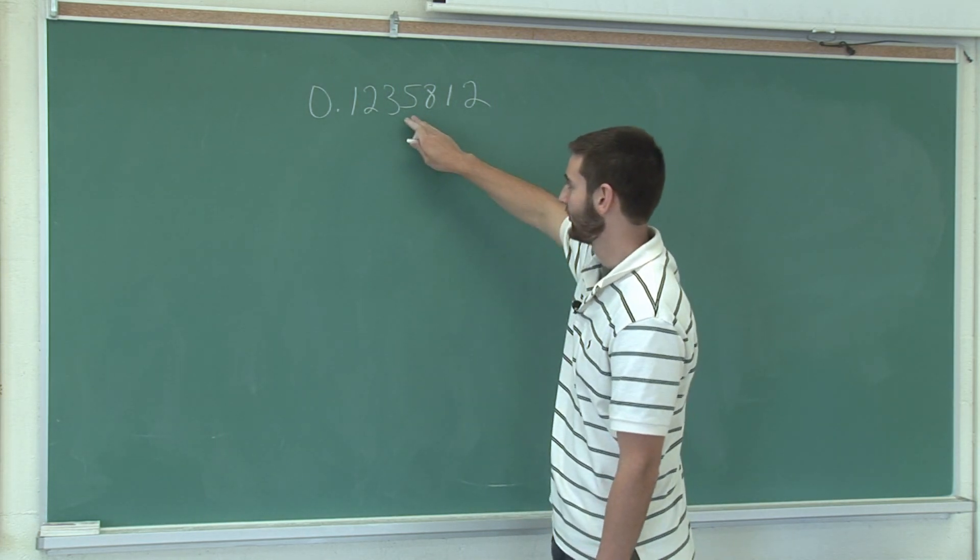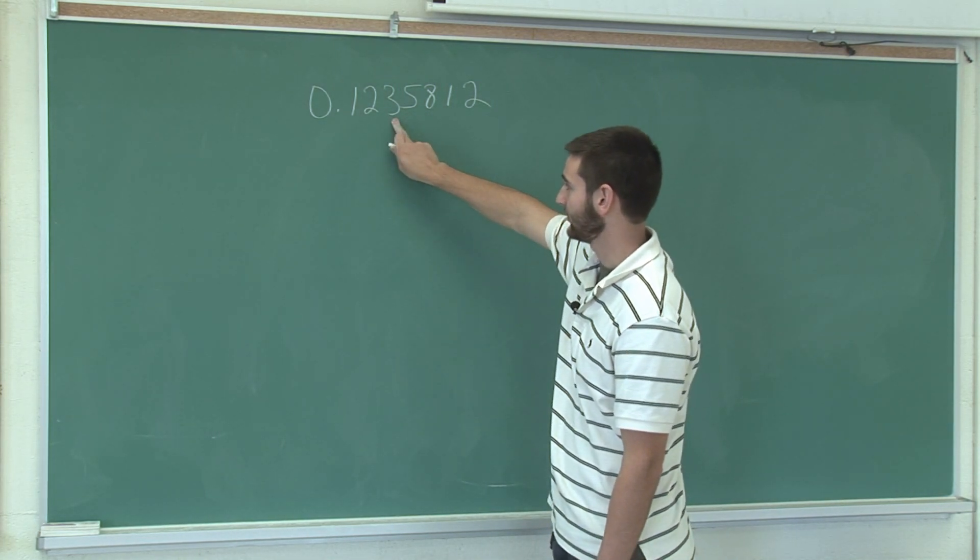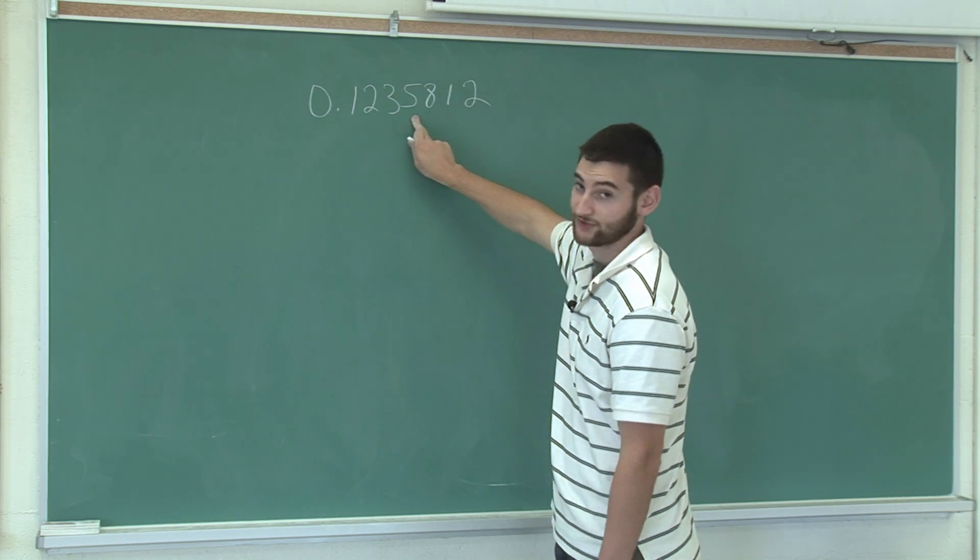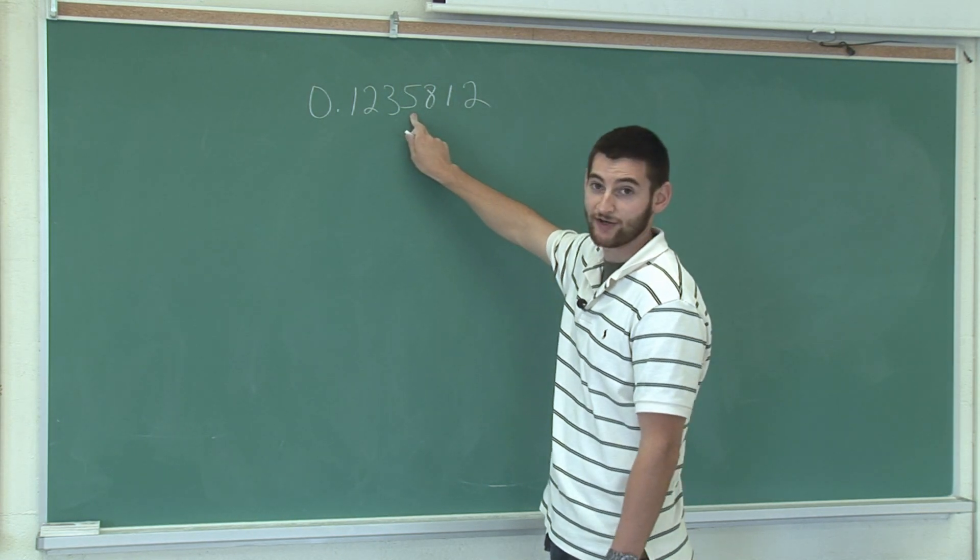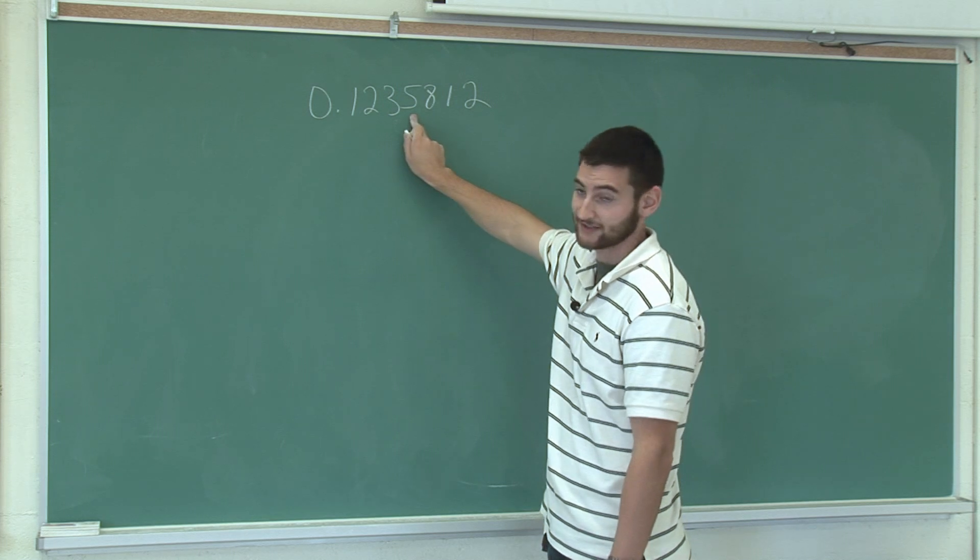If I wanted to round this number to the thousandths place, I look to the ten thousandths place and see if it's greater than five or equal to five or less.